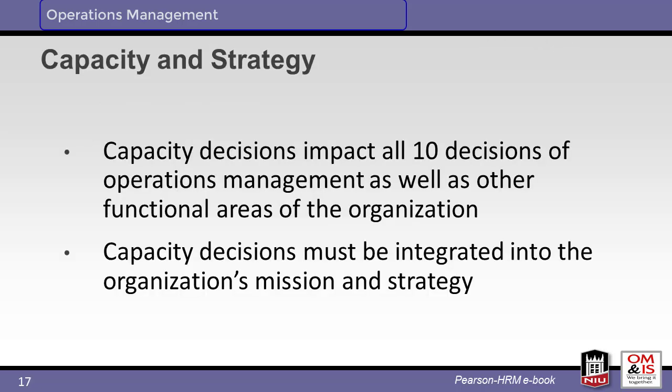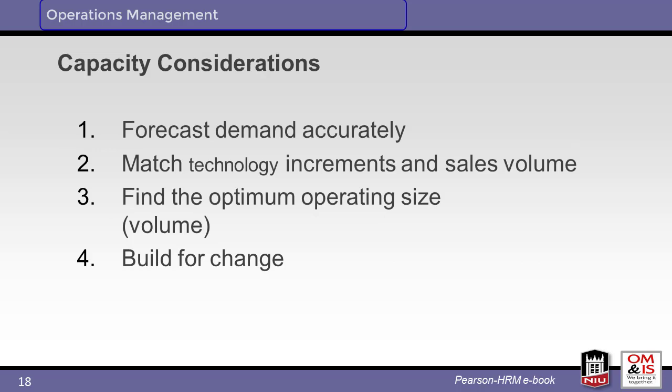All ten decisions of operations management are affected by capacity, and just like the OM decisions, the capacity strategy must be in alignment with the larger organization's mission and strategy. A flexible strategy requires flexible production methods. Capacity management calls for accurate forecasts, technology in alignment with the strategy and sales volume, and the ability to change over time. Since forecasts are imperfect and technology evolves, change is inevitable.